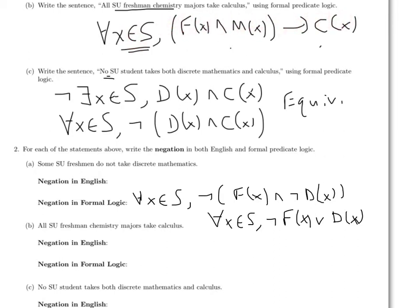Now this is really important because negating an implication is really common in mathematics. So remember that for an implication to be negated, in other words for an implication to be a lie, it means there has to be an example where the first part is true, the hypothesis is true, and the second part is false. So in English would be saying some SU freshman chemistry major doesn't take calculus.